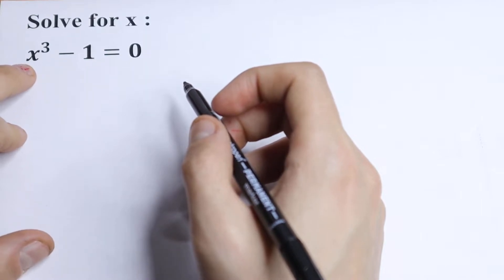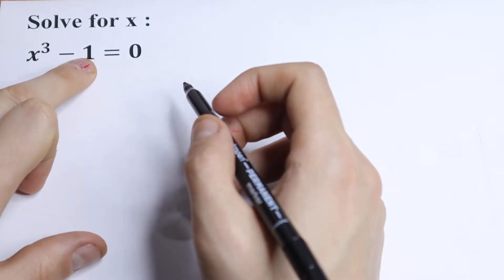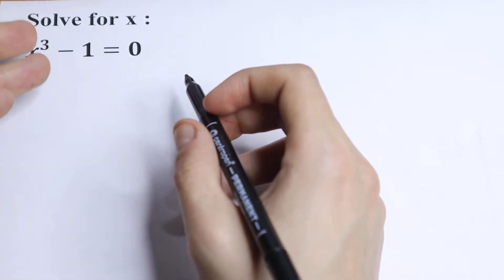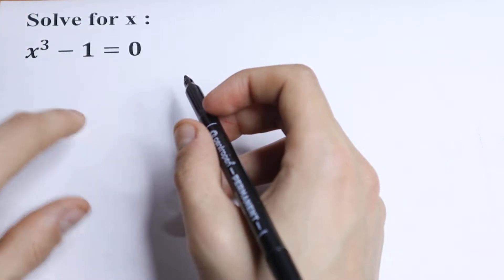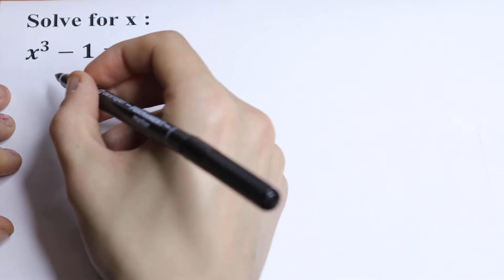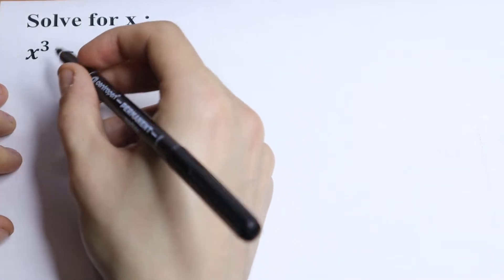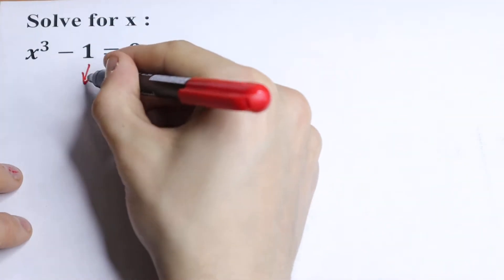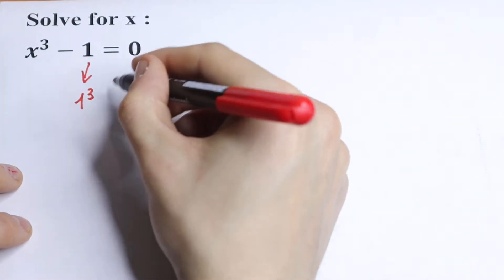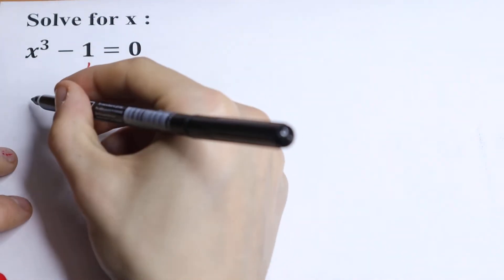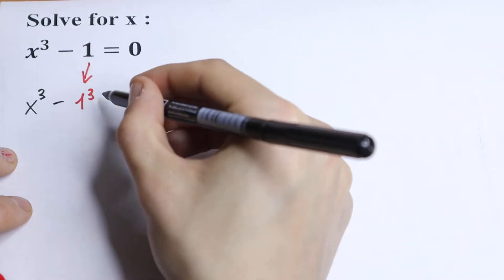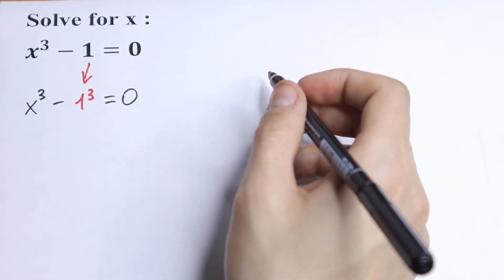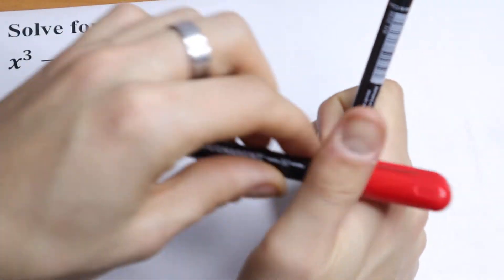First of all, we have x cubed minus 1. The minus 1 can be written as 1 cubed, because then we can use the formula for the difference of cubes. So we rewrite this as x cubed minus 1 cubed equals 0.